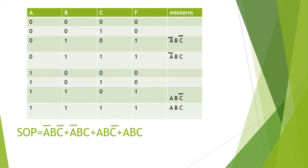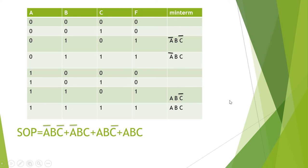To find the SOP, we add one more column for minterms. We only write minterms for rows with output 1. The first two cases have output 0, so we skip those. For the case where A=0, B=1, C=0, the minterm is A-bar, B, C-bar. For A=0, B=1, C=1, the minterm is A-bar, B, C. For A=1, B=1, C=0, it is A, B, C-bar. For A=1, B=1, C=1, it is A, B, C.